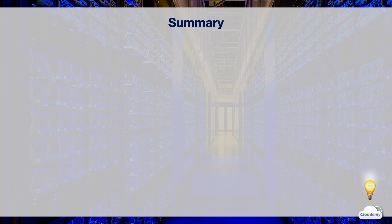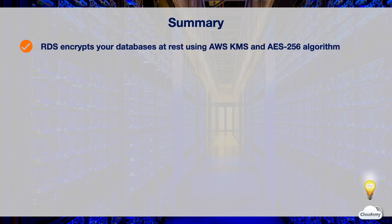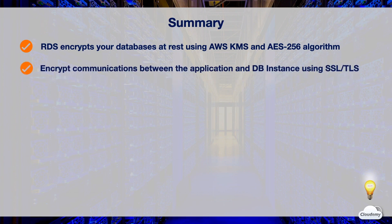In this episode, we've learned RDS security. You can encrypt your RDS database at REST using AWS KMS. Data that is encrypted at REST includes the underlying storage for DB instances, automated backups, read replicas, all logs, and snapshots. RDS encryption uses the industry standard AES-256 encryption algorithm to encrypt your data on the server that hosts your RDS instance. You can encrypt communications in transit between the application and DB instance using SSL or TLS.